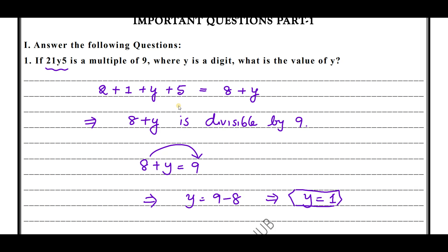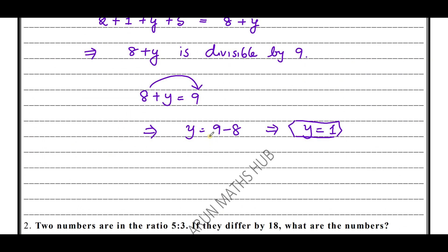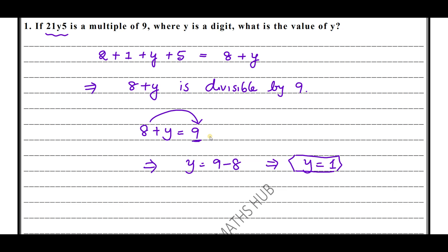A similar question has been given in the practice session for you to solve. You should know the divisibility conditions of 2, 3, 4, 5, and 9. If a number is divisible by 9, the sum of its digits is also divisible by 9. Note: we assumed 8 plus y equals 9 rather than 18, because if we took 18, y would become a double digit. Since y is a single digit, we take 8 plus y equals 9.